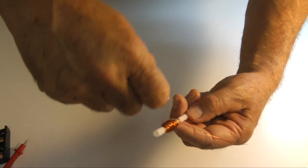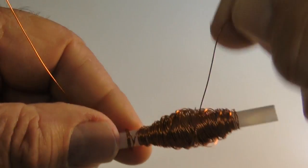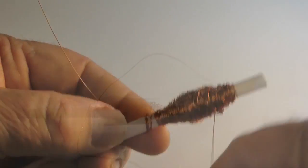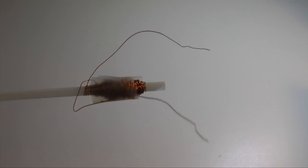I start by wrapping 12 meters of 28-gauge magnet wire close to one end of a straw, creating a coil. I have to leave both ends of this coil exposed.